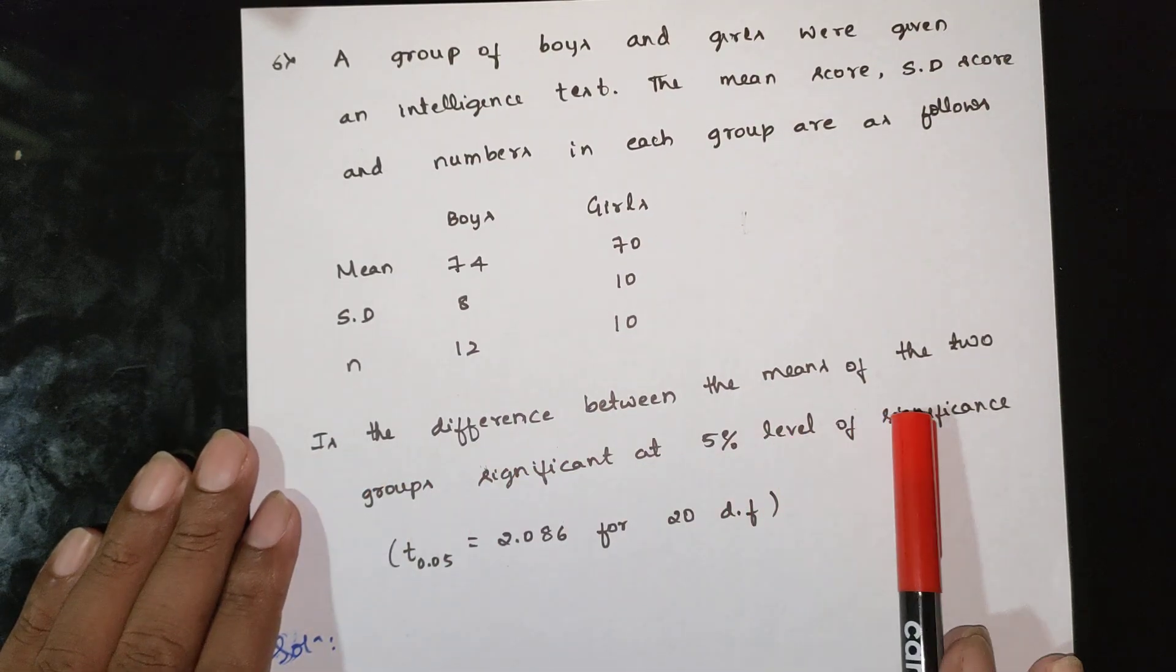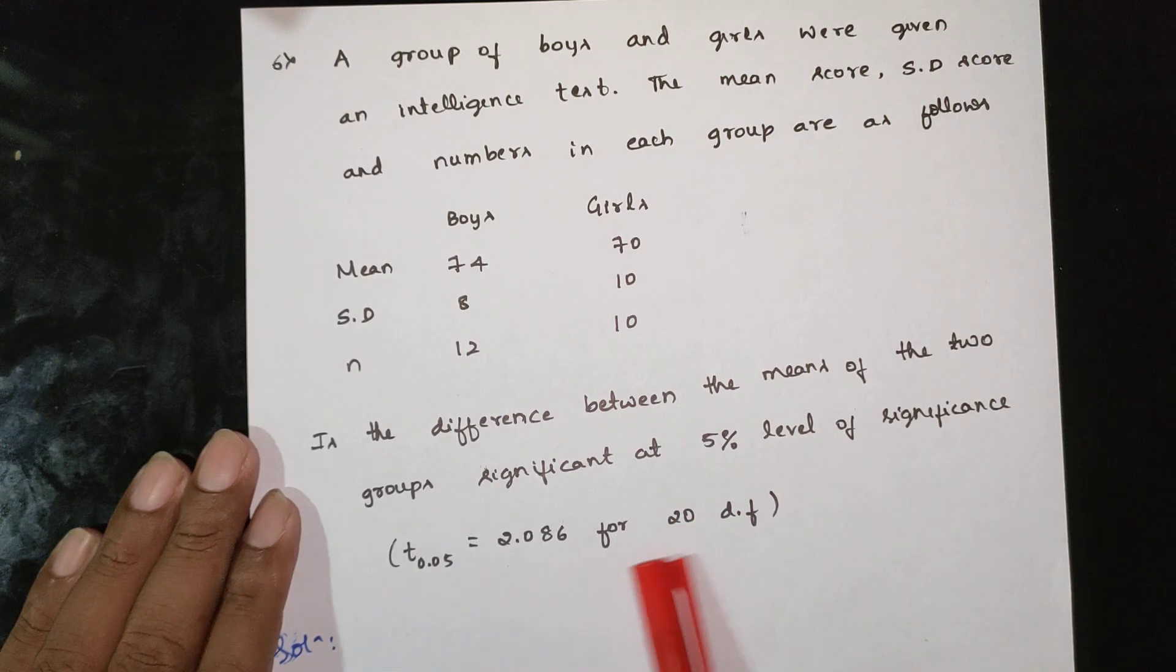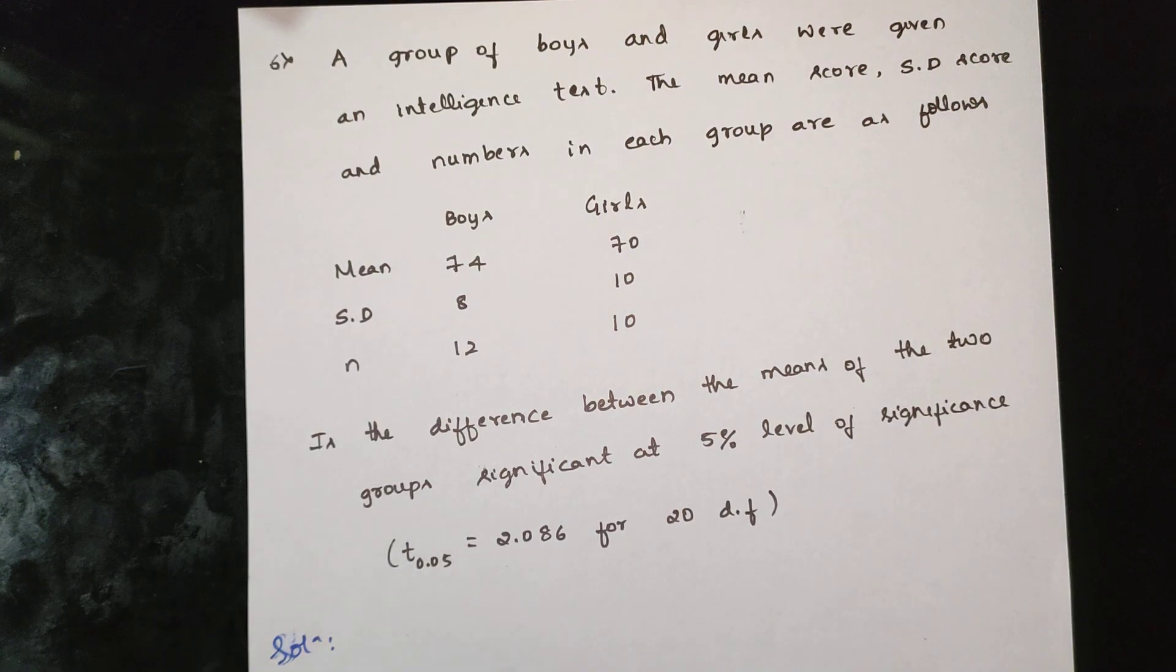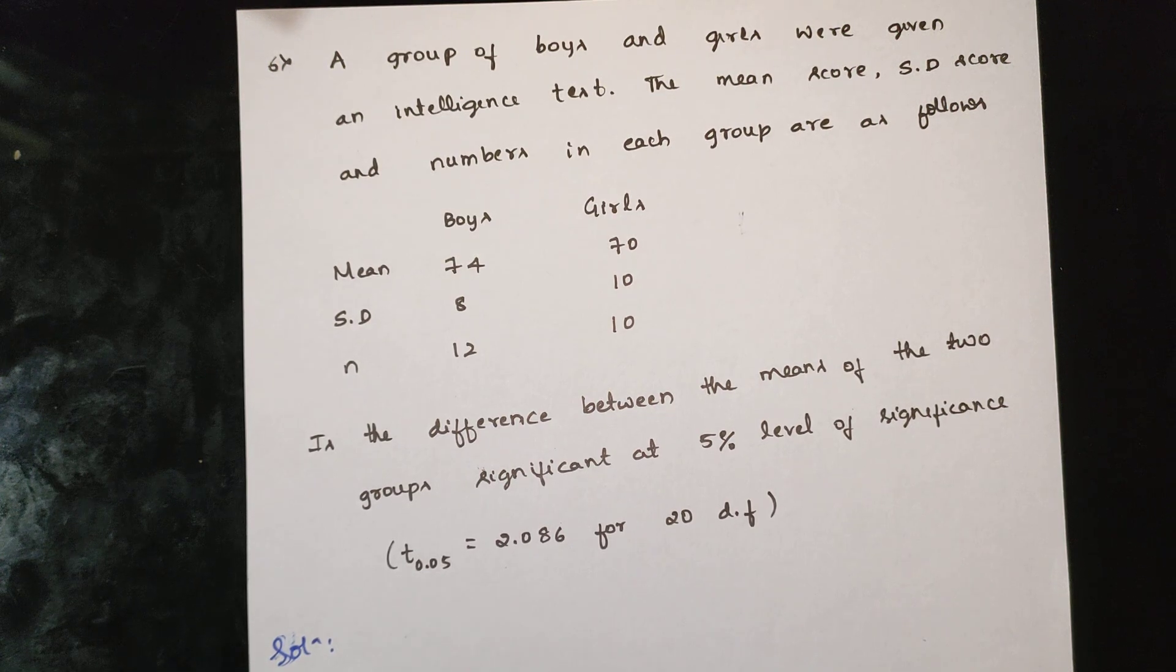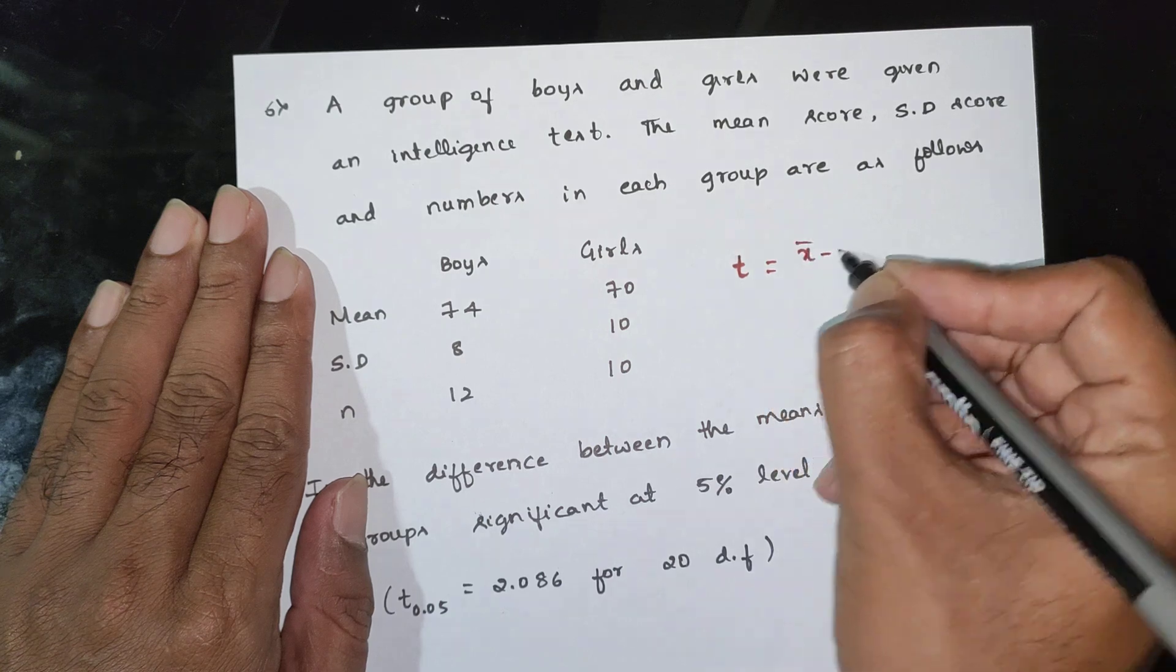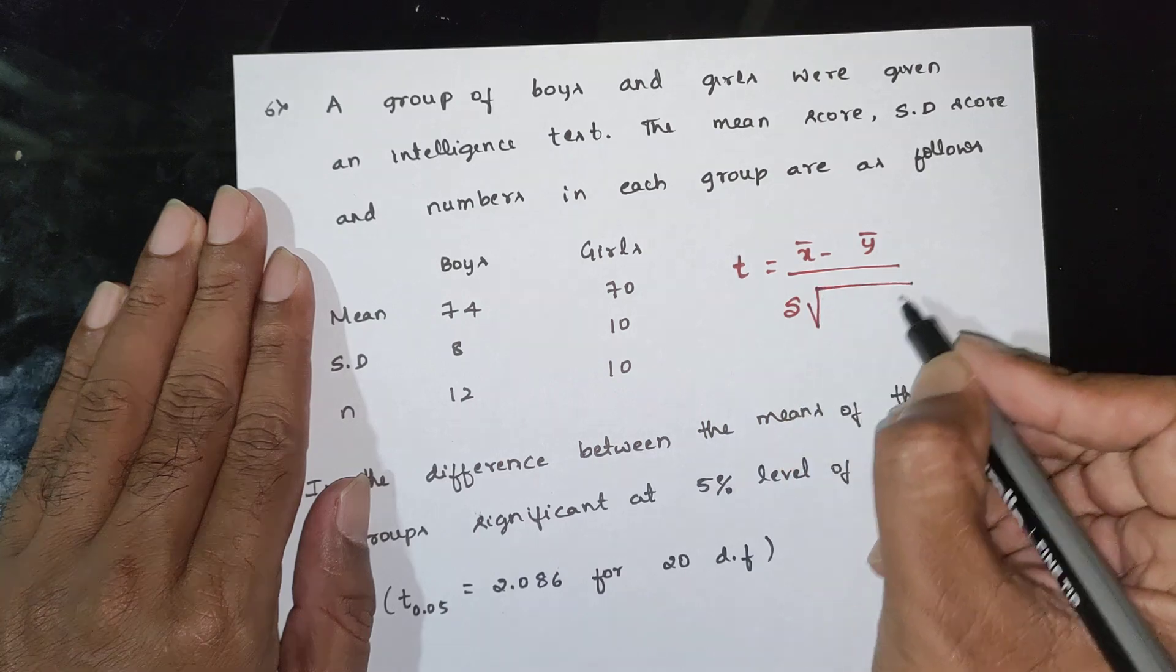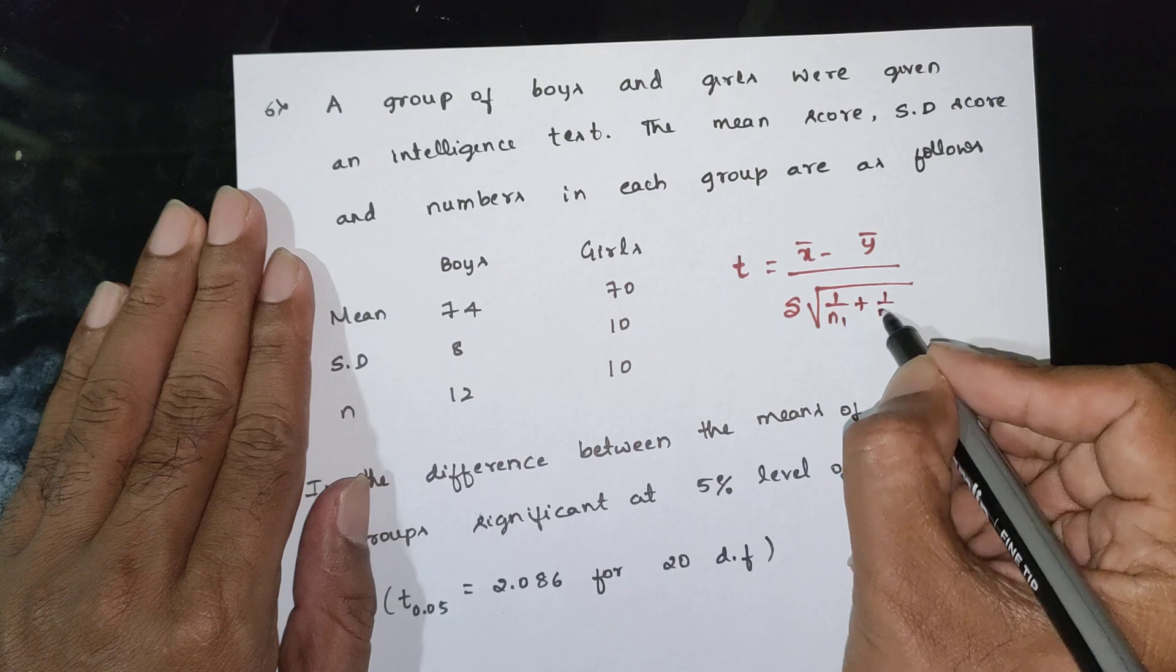Is the difference between the means of the two groups significant at 5% level of significance? T value is equal to 20 degrees of freedom. T is equal to x bar minus y bar by s into root of 1 by n1 plus 1 by n2.